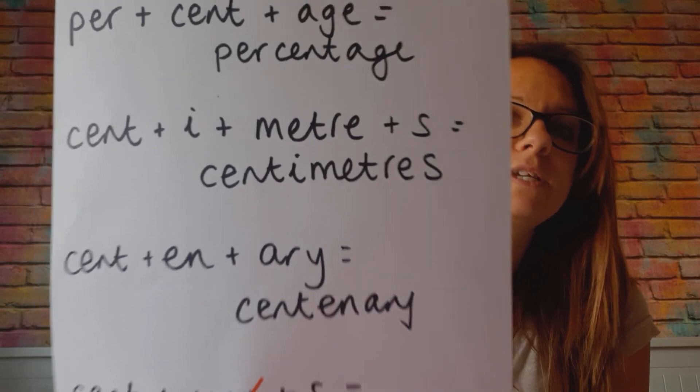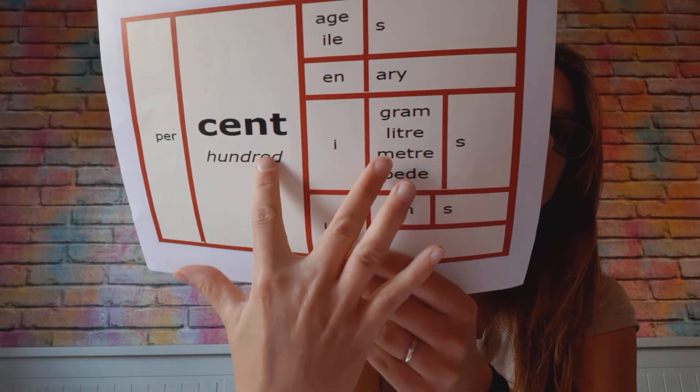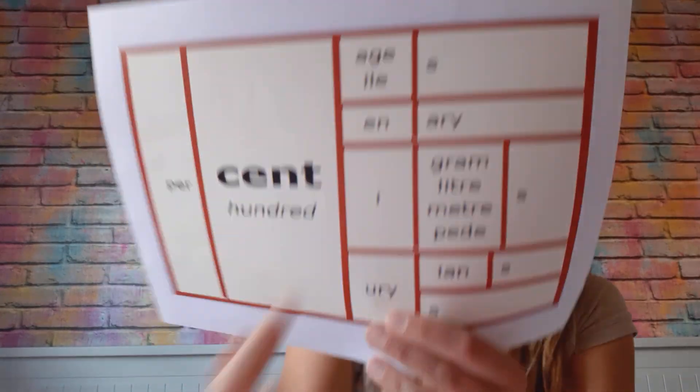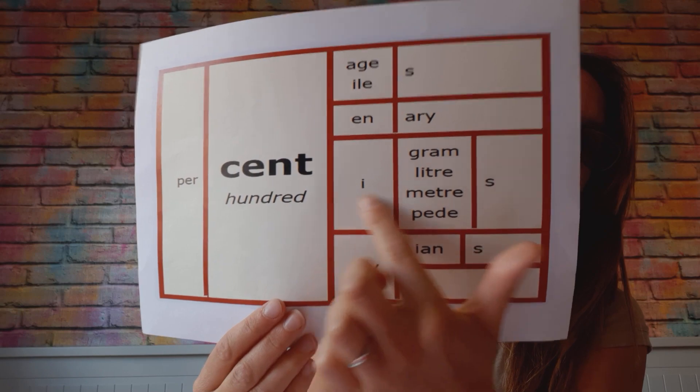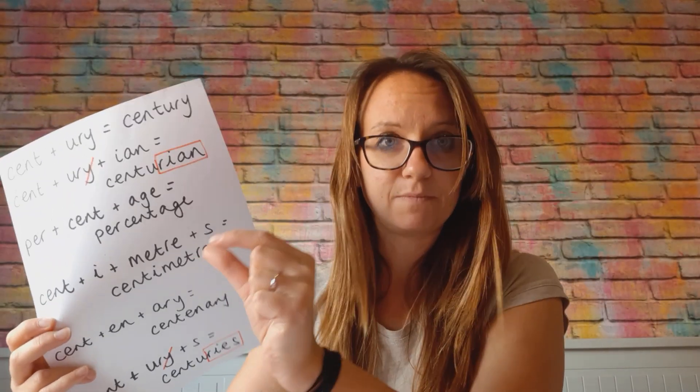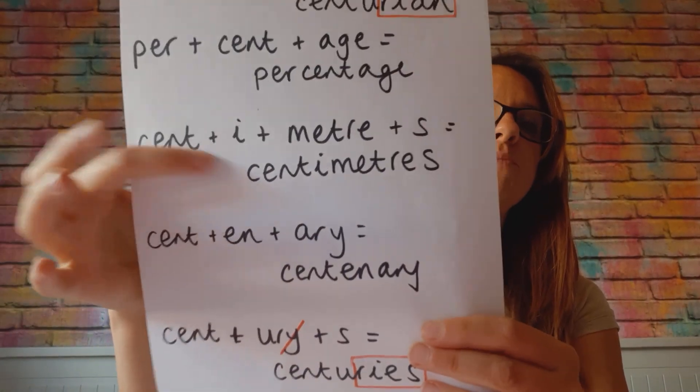We've got centimetres. The connecting 'i' in between doesn't have any meaning — it's called a zero phone, because it has a sound but zero meaning. It's there more just for ease of speech. So we've got cent + e + metre. We've also got centigram, centilitre, and centimetre, because a centimetre is a hundredth of a metre — you split one metre into a hundred, and each of them is a centimetre. A hundred centimetres in a metre, a hundred centigrams in a gram, a hundred centilitres in a litre.